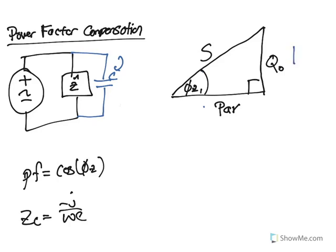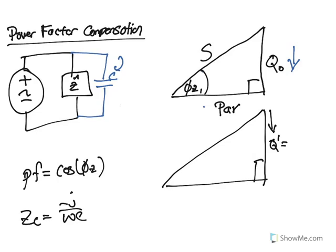So if I have my above triangle, which is my original circuit, I can improve this by taking Q and reducing it down. We'll call this Q prime. Q prime is going to be our original reactive power plus our new reactive power, and this value is actually going to be less.